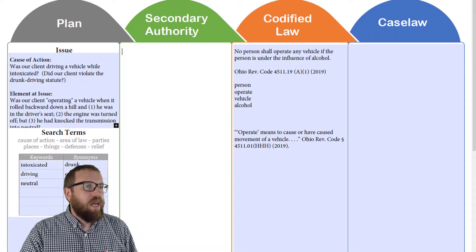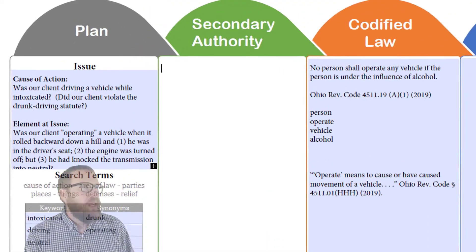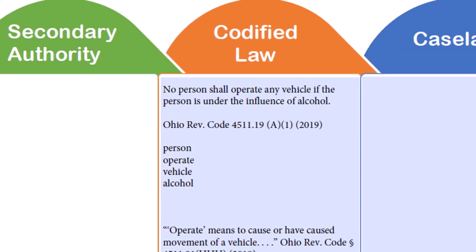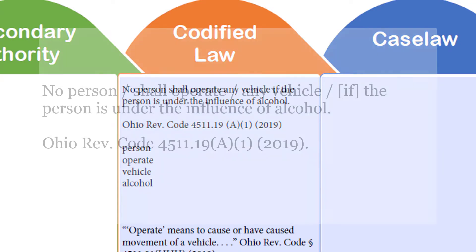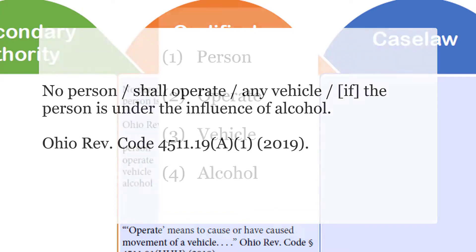The way this looks in the research process is like this — there are four steps. You start really broadly, as you can see I wrote the issue broadly there, and then we got the statute. When you find a statute, or any definition or case law — it doesn't matter where the definition or rule comes from — you want to break it out and find its elements, unless the elements have already been provided.